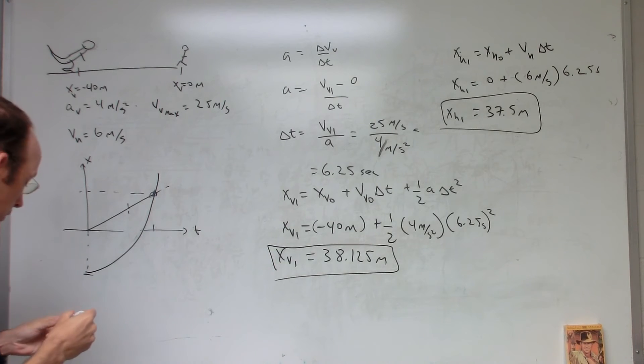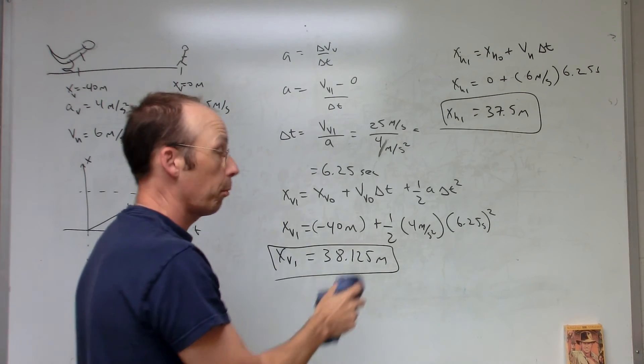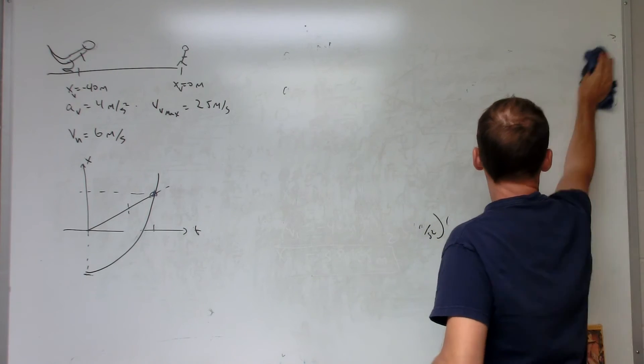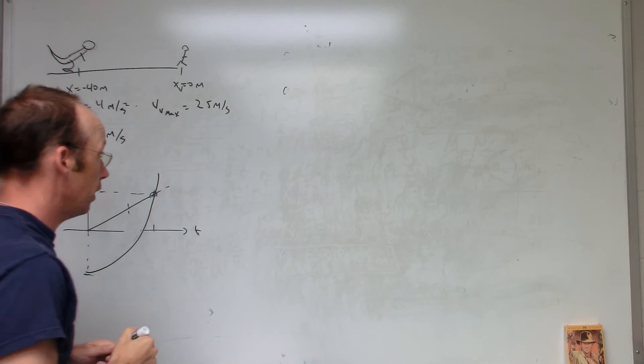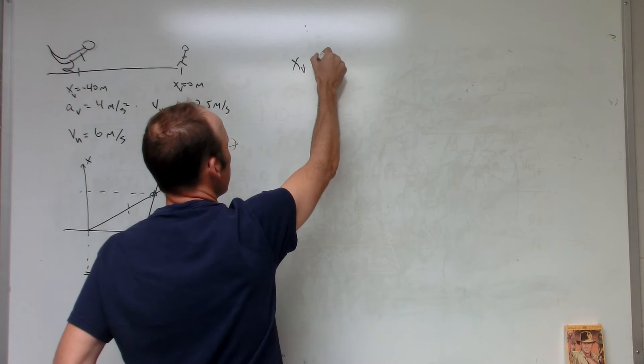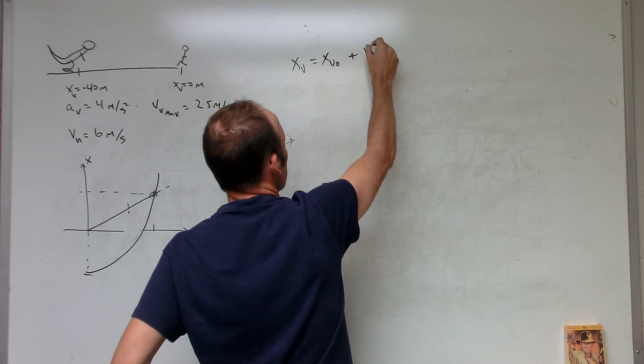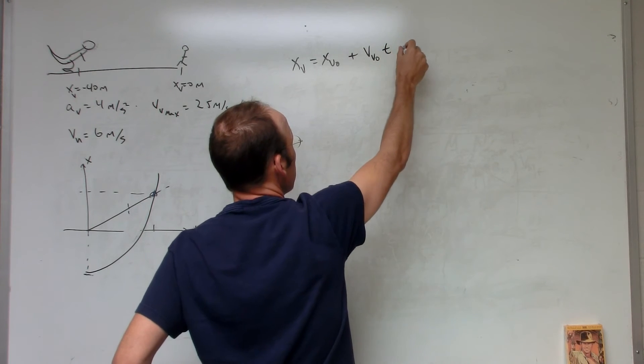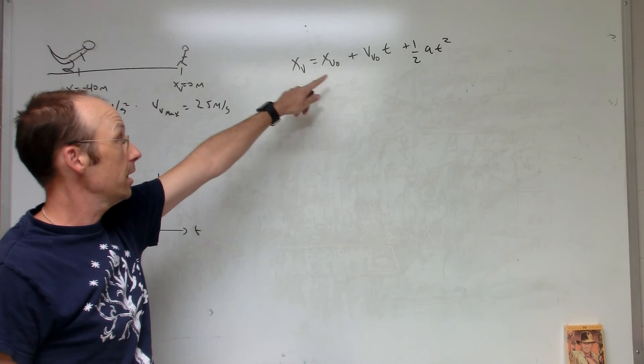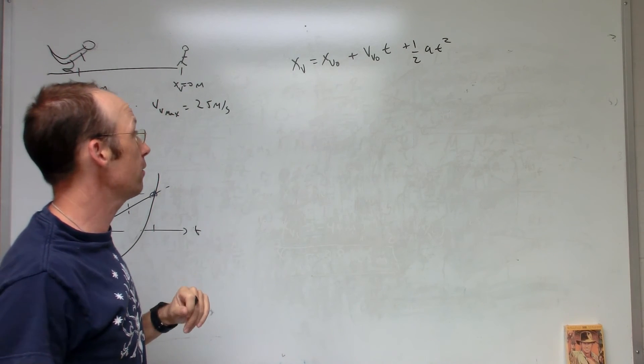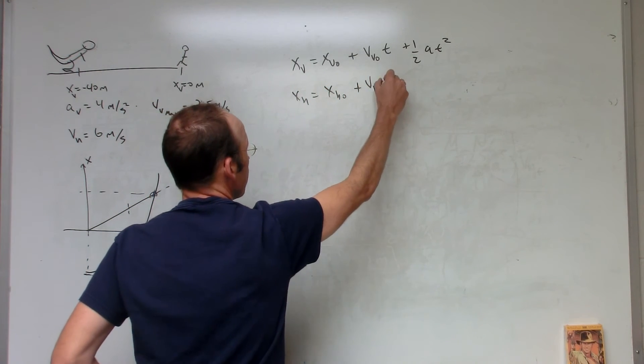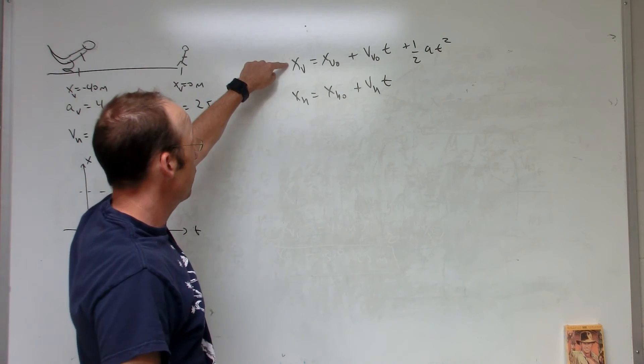Now it's a little bit easier since I know the Velociraptor is accelerating. I can write X Velociraptor for any time is the initial position of the Velociraptor plus the initial velocity of the Velociraptor times T plus one half a T squared. So this gives me the position of the Velociraptor at any time T. Now the position of the human would be the initial position of the human plus the velocity of the human times T because the human is not accelerating. So now I have a position function for the Velociraptor and the human.